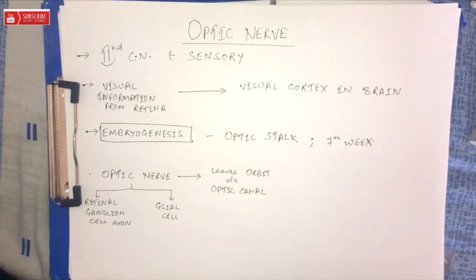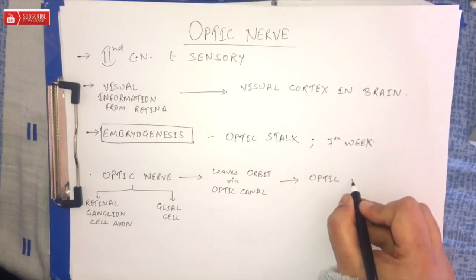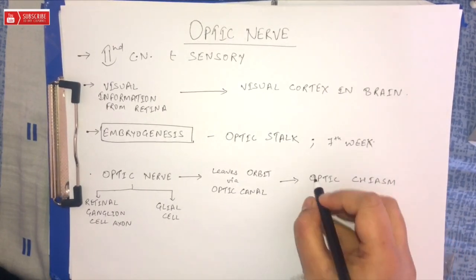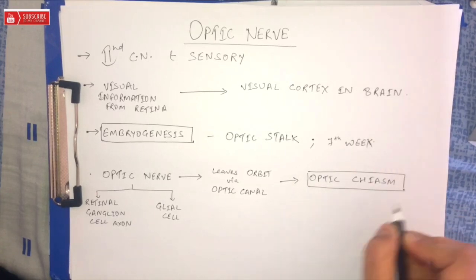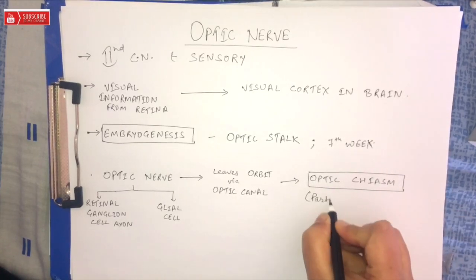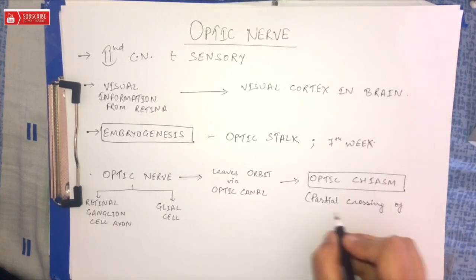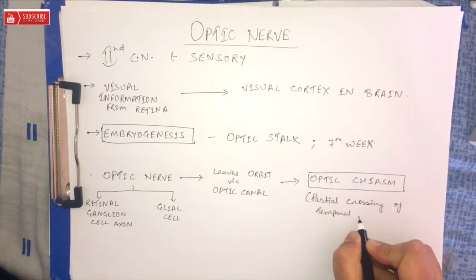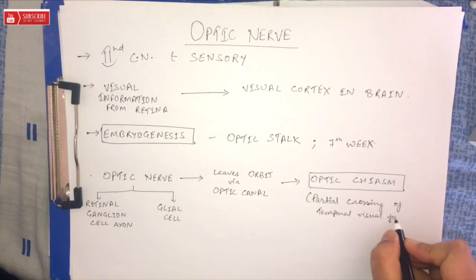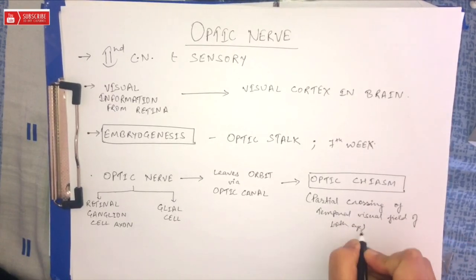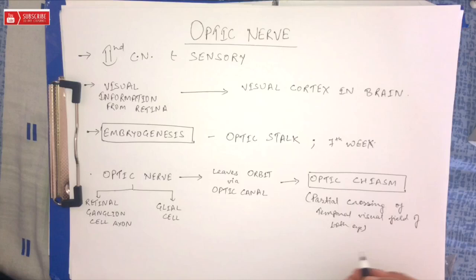It then runs posteromedially toward the optic chiasm, where there is a partial crossing of fibers from temporal visual fields of both eyes. At the optic chiasm, fibers from the nasal half of each retina cross over to the contralateral optic tract.